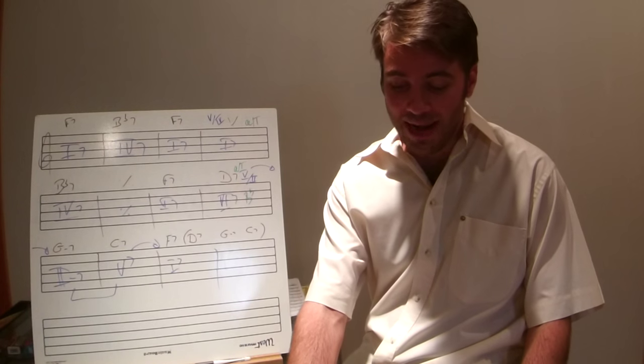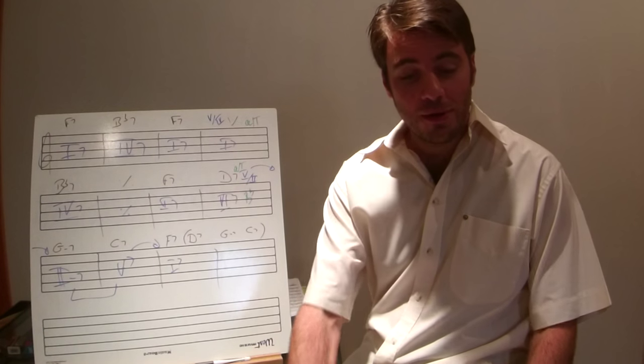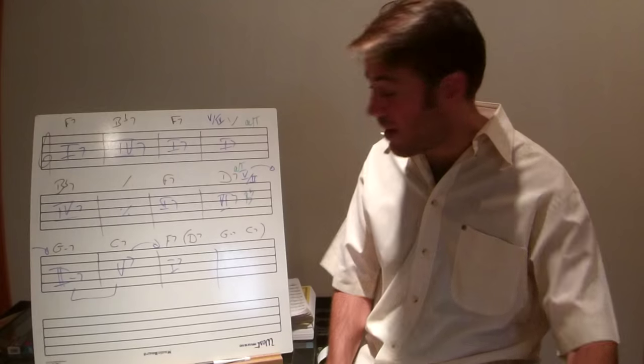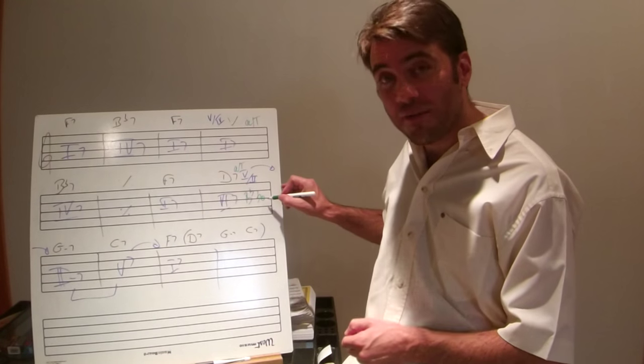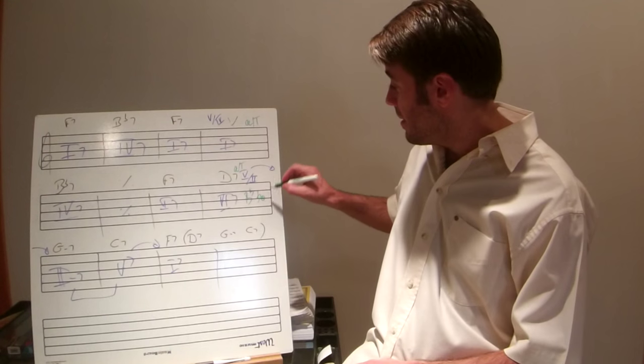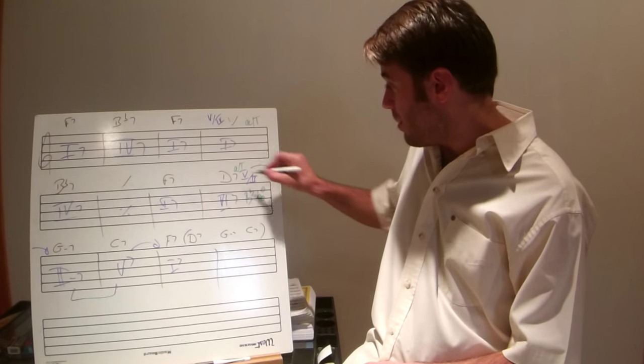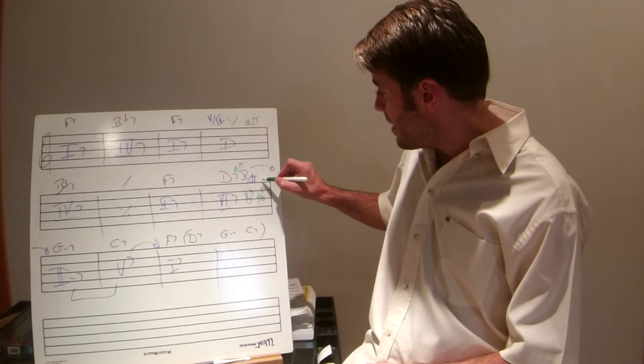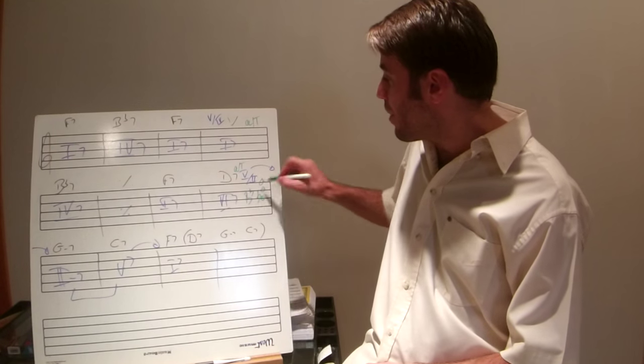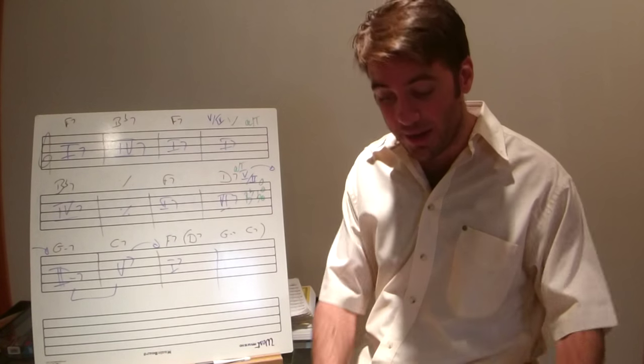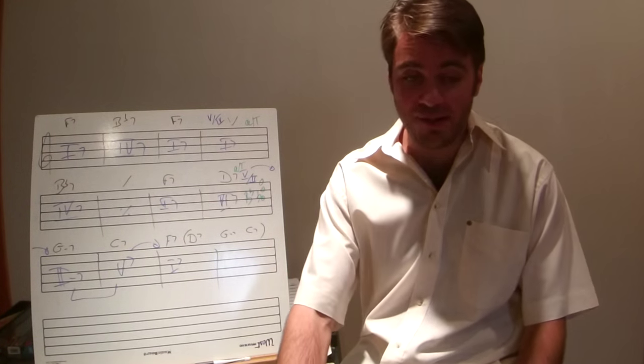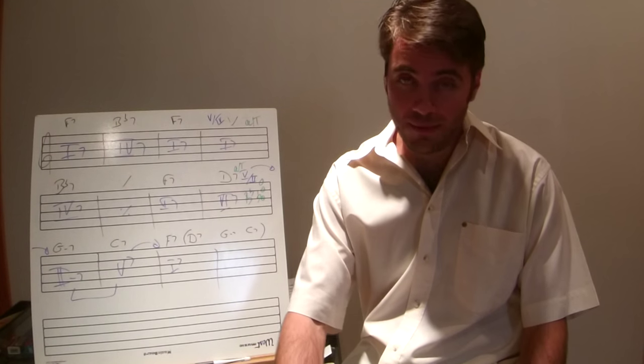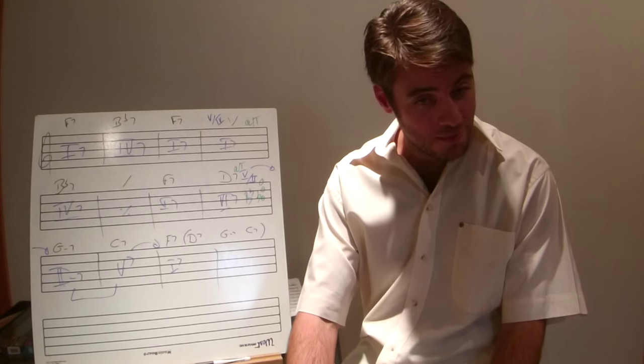to make it sound altered, you can play the B flat major triad, which gives us the B flat, so the flat 13 that we talked about, the D which is the root, and then F natural, which is going to be the sharp 9. And the melody is really clearly stating that.